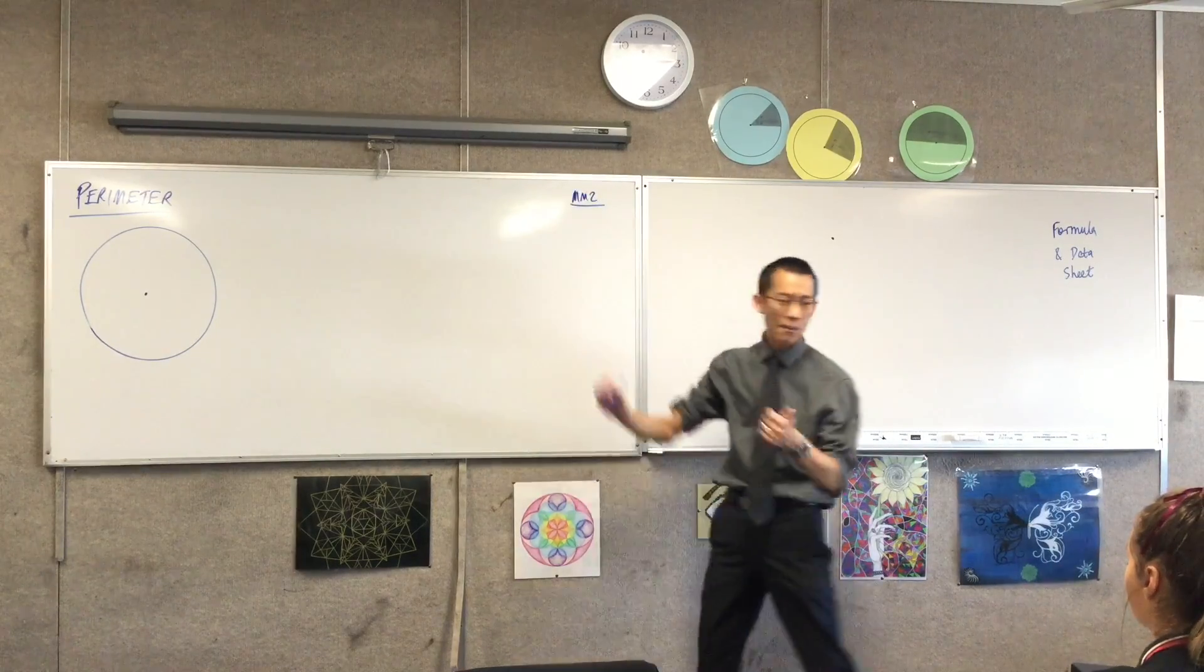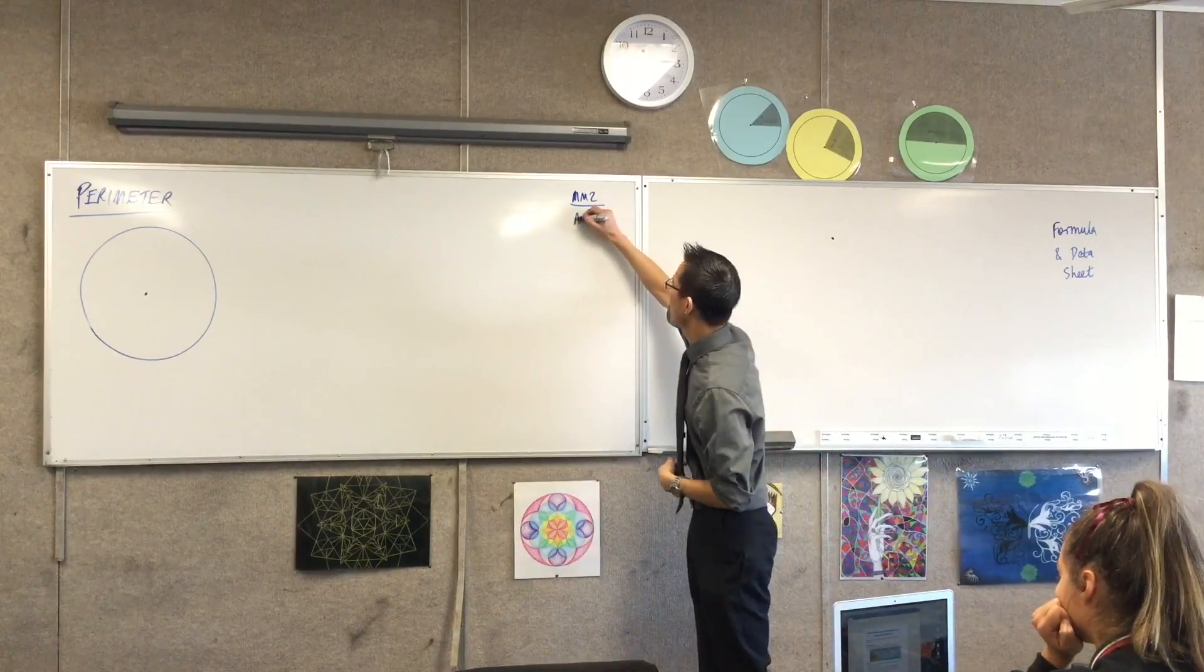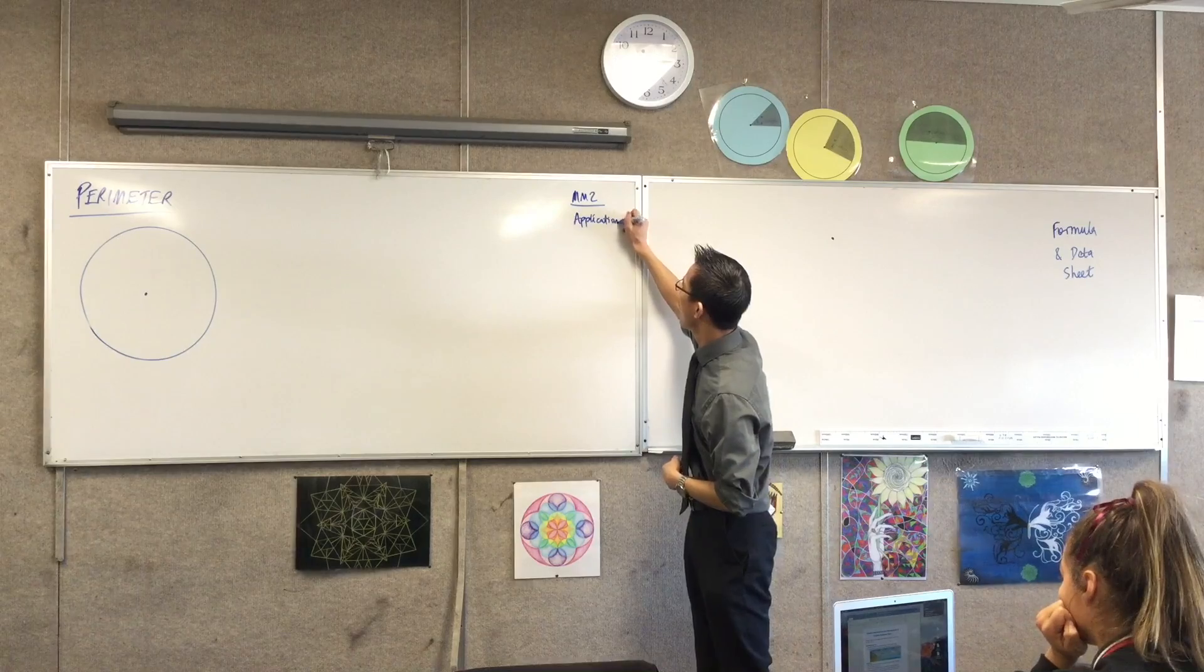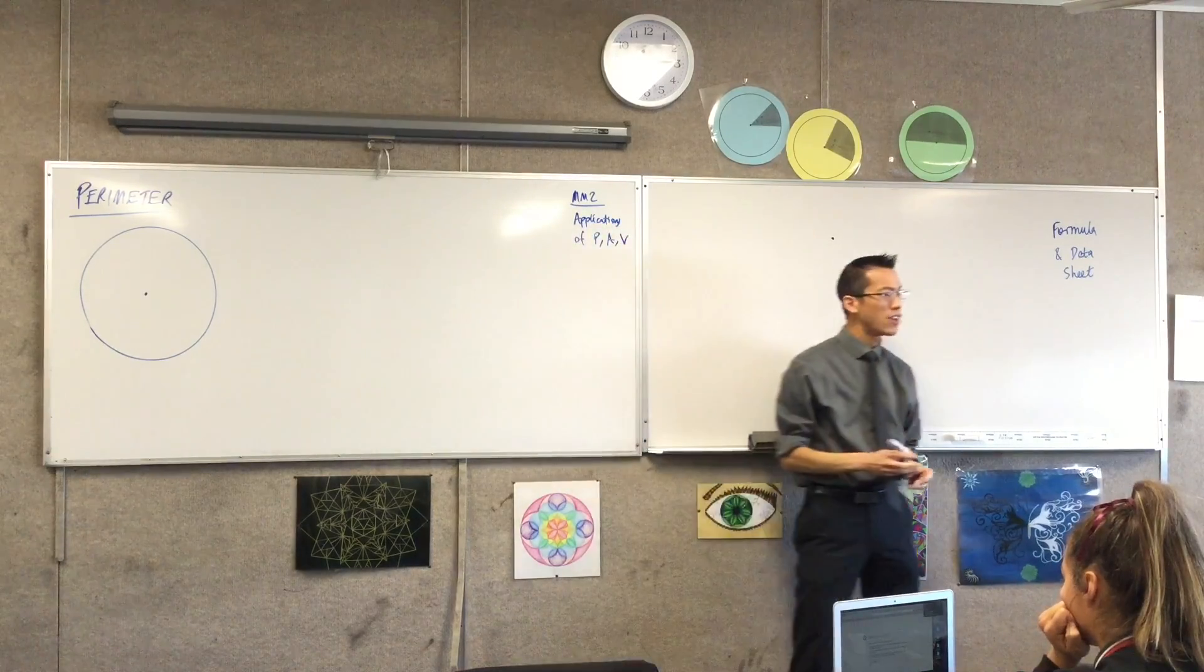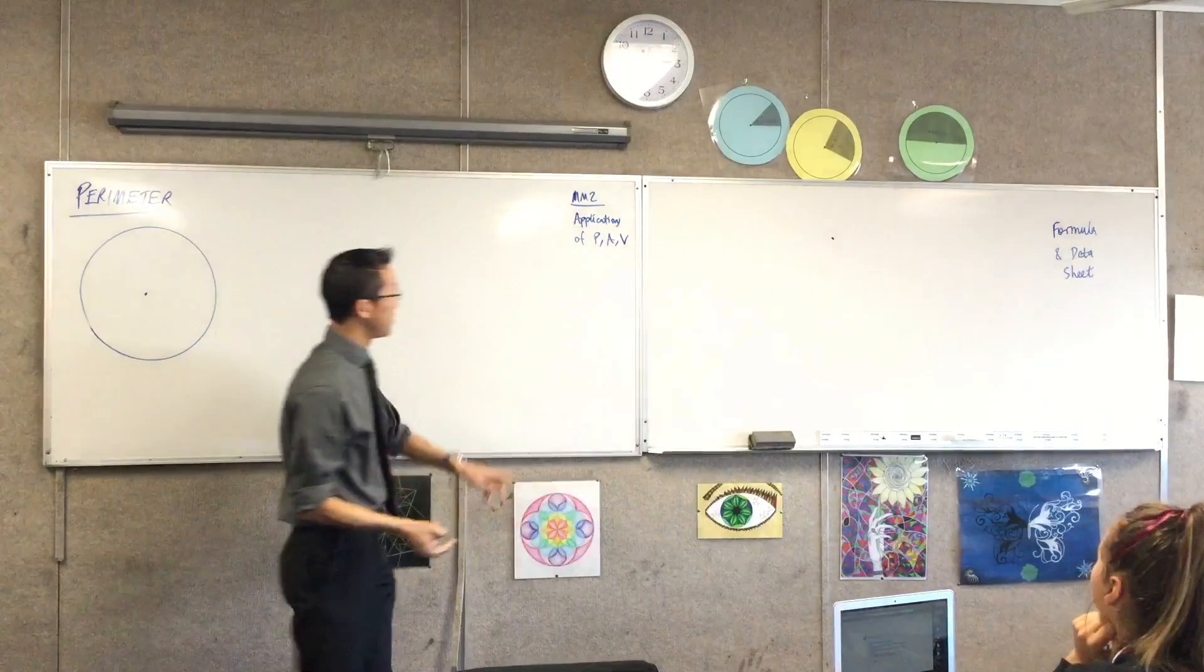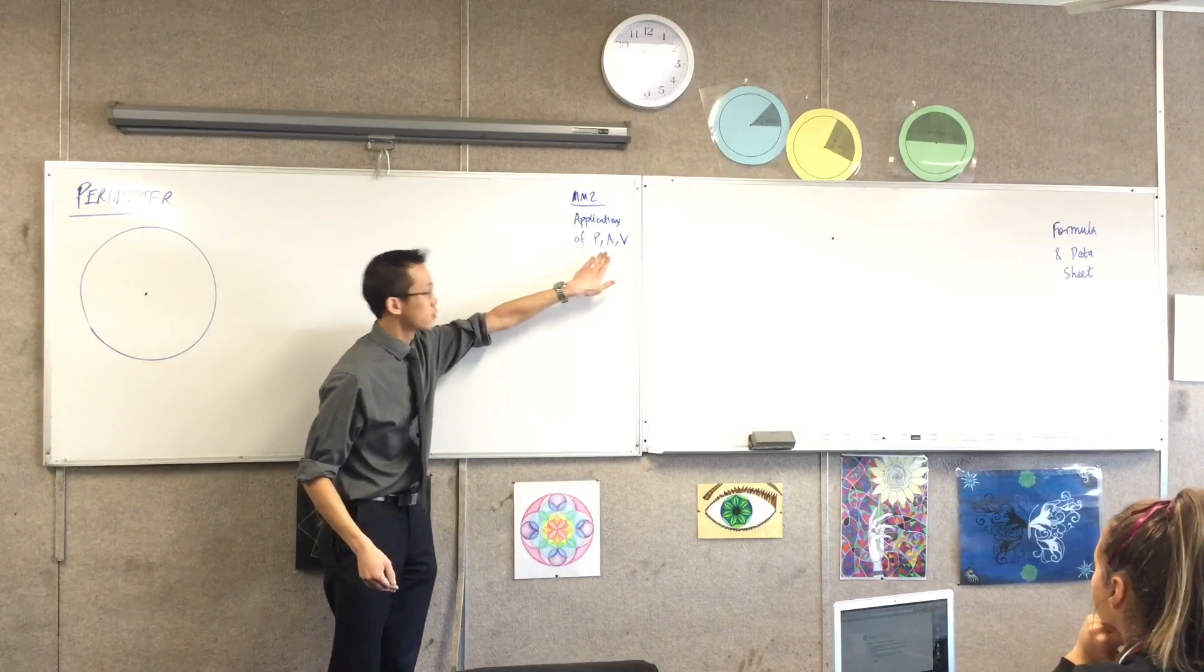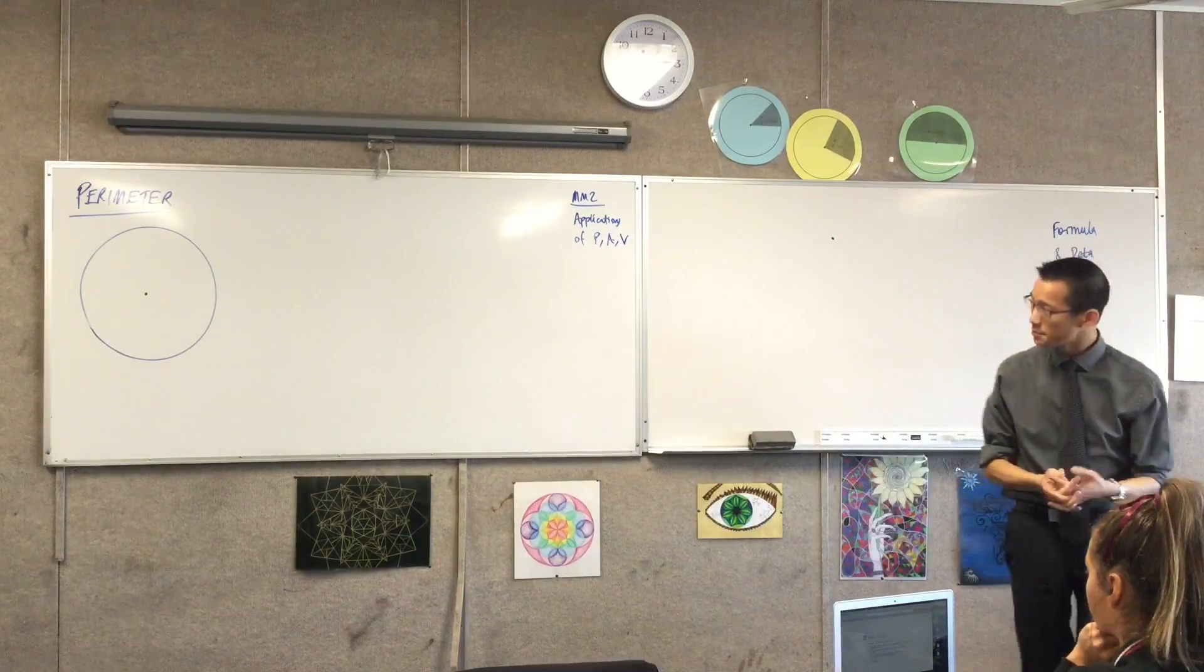MM2 is Applications of Perimeter, Area, and Volume. Applications of Perimeter, Area, and Volume. And you may remember these back from when we did the metric units of measurement. These are about one-dimensional, two-dimensional, and three-dimensional space measurements.